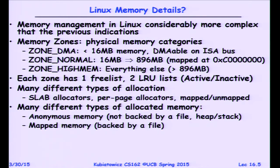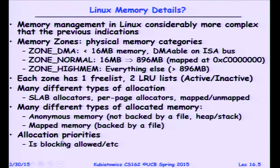In Linux, you can get what's called anonymous memory, which is just allocating chunks of memory for heap or stack. Mapped memory is memory that directly reflects the contents of a file. You can do what's called an mmap to map a file into your memory, and now when you read and write that memory, it's as if you're reading and writing the file without actually having to do read and write system calls.